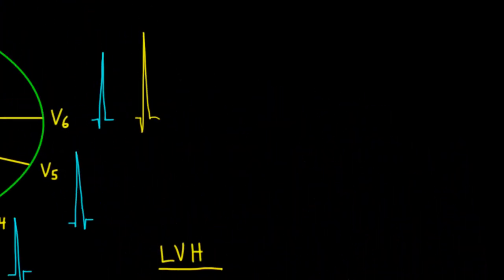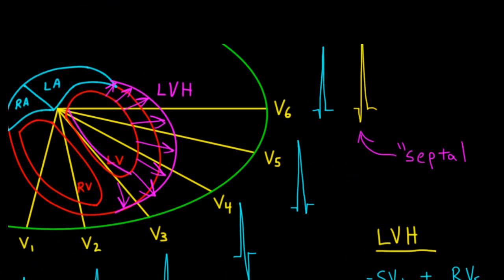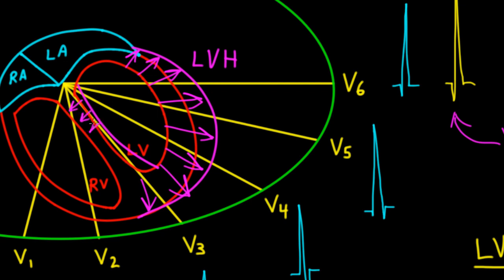Some patients with LVH can have more prominent Q deflections at the beginning of the QRS complex. The Q wave represents depolarization of the interventricular septum, so these are called septal Q waves. With long-standing hypertrophy, the whole chamber gets thicker — including the septal side — making the forces of septal depolarization more noticeable. Note that this Q is lowercase, denoting a small Q deflection, as opposed to an uppercase Q which represents a pathologic Q wave indicating myocardial necrosis due to MI.